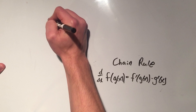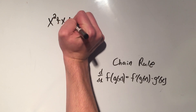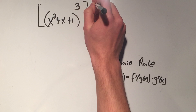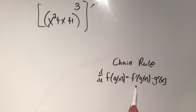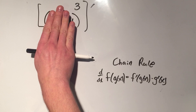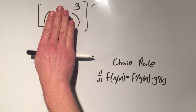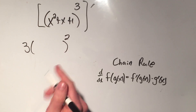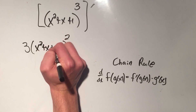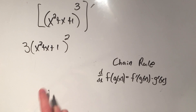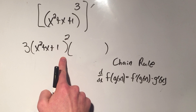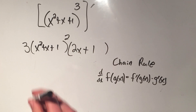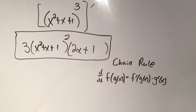So for example, if I had the function x squared plus x plus 1 composed inside the cubed function, this would be a chain rule. I take the derivative of the outside function — the outside function is x cubed. What's the derivative of x cubed? It's 3x squared. But it's not x, it's this inside thing. So I take the derivative of the outside, copy the inside, and then multiply by the derivative of the inside. The derivative of x squared is 2x, the derivative of x is 1, the derivative of 1 is 0. That's the derivative using the chain rule.